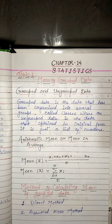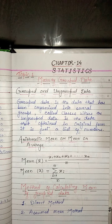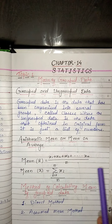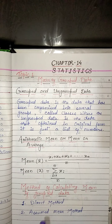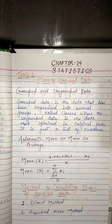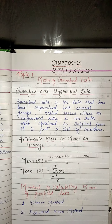This means observation x1 occurs f1 times, x2 occurs f2 times, and so on. We also know the methods of calculating the mean of grouped data. The mean of grouped data can be found by the following methods: first is the direct method, and second is the assumed mean method.